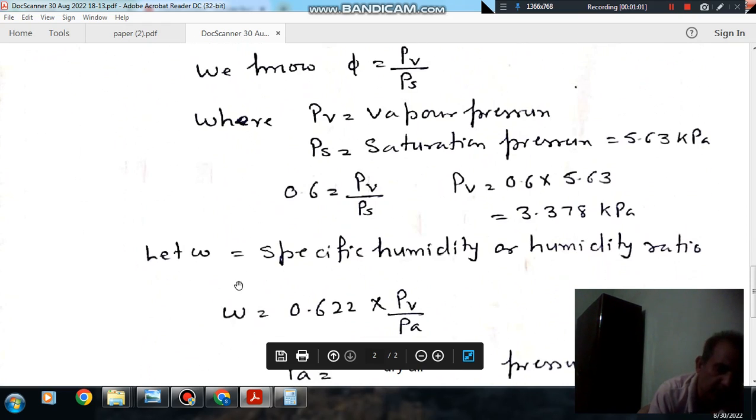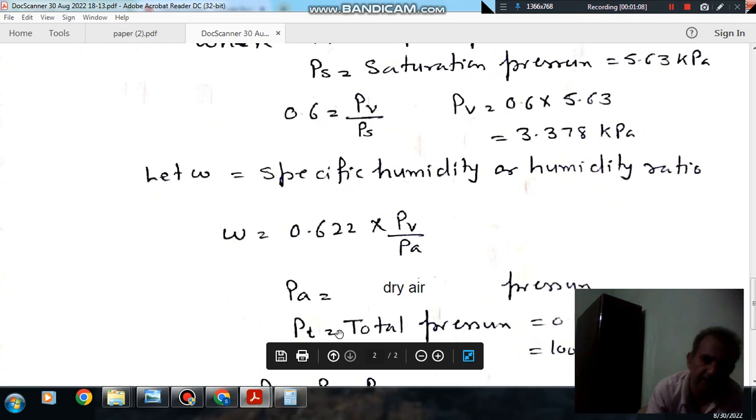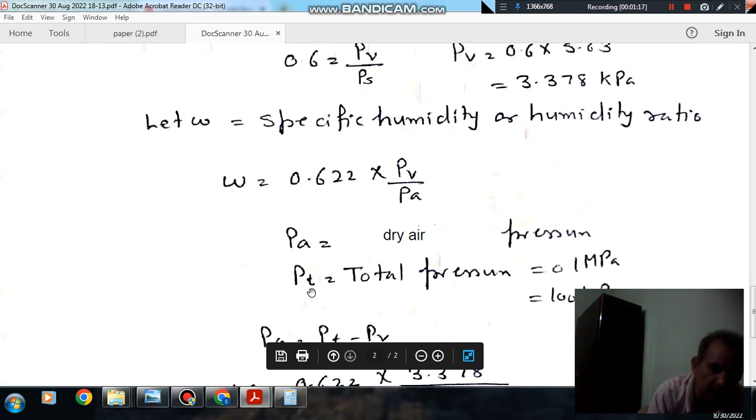Now, the formula for specific humidity is 0.622 times PV by PA, where PA is the dry air pressure and PV is the vapor pressure. This dry air pressure can be found by subtracting the vapor pressure from the total pressure.